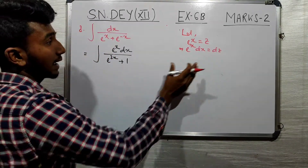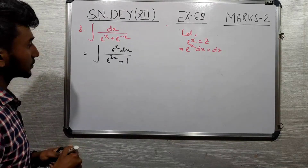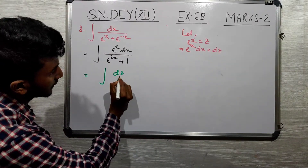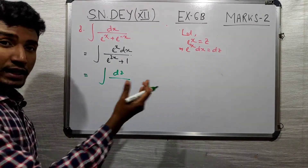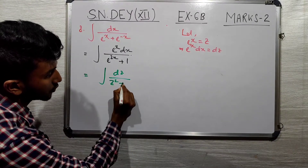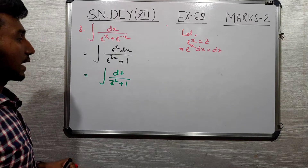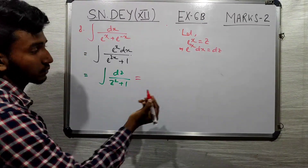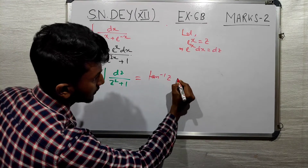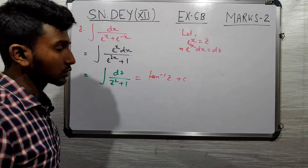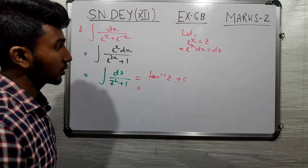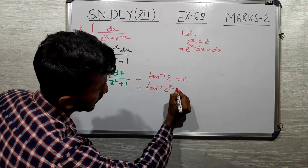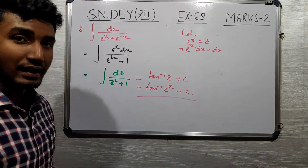So after substitution we get the standard integral, and the result is arctan of z plus C, which gives us arctan of e to the power x plus C.